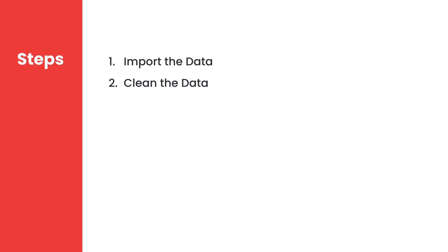If there is data that is irrelevant, we should remove it. If it's duplicated or incomplete, we can remove or modify it. If our data is text-based — like the name of countries, genres of music, or cats and dogs — we need to convert them to numerical values. This step really depends on the kind of data we're working with. Every project is different.